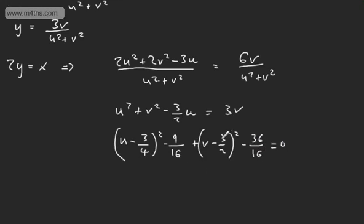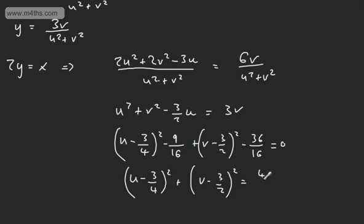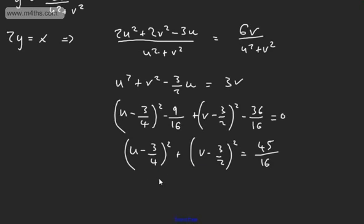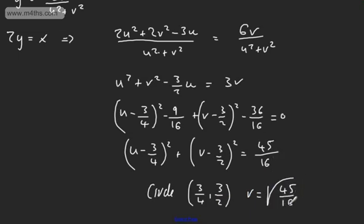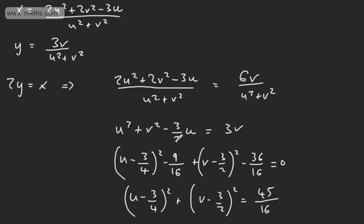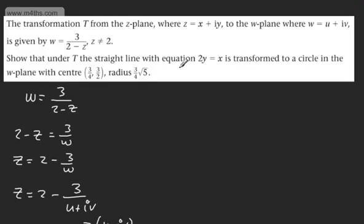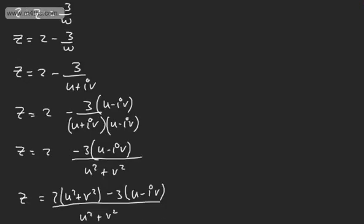So we've got U minus 3 over 4 all squared plus V minus 3 over 2 all squared equals 45 over 16. This is in the form U minus A all squared plus V minus B all squared equals R squared, so this is a circle with centre 3 over 4 comma 3 over 2. The radius is the square root of 45 over 16: root 45 gives 3 root 5, root 16 gives 4, so the radius is 3 root 5 over 4. We've expressed W in terms of a circle.